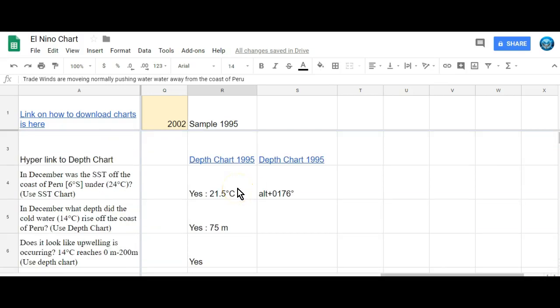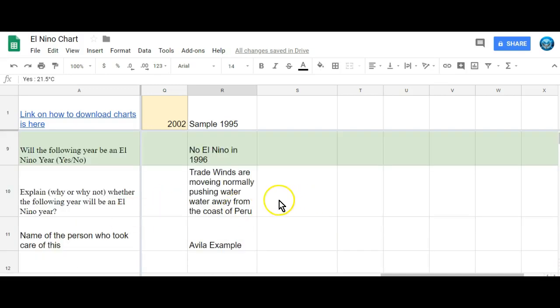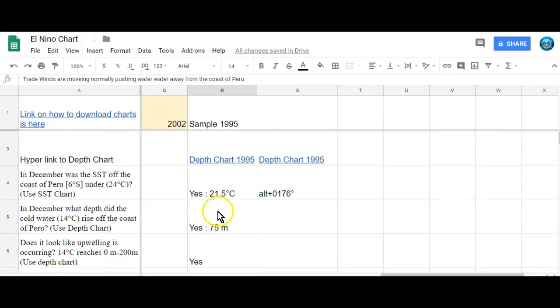Now, if one of these says no, so if this answer is no, the water is above 24 degrees Celsius, so it's 24 or above, that means that the trade winds are not moving normally. And again, you only need one of these things to say no. So again, if any one of these things says a no, then that means that trade winds are not moving normally, and that means that the next year will be an El Niño year. So you don't have to have both.